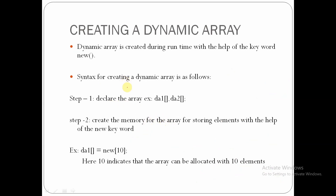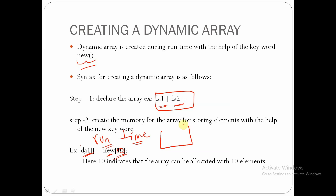The syntax for creating a dynamic array uses the keyword `new`. By using `new`, we can allocate memory for the dynamic array. For example, if we want to create two dynamic arrays da1 and da2, by using the keyword `new` we can allocate the number of elements we want to store. Here, `new[10]` means 10 memory locations will be allocated for dynamic array da1, meaning the array can hold 10 elements.